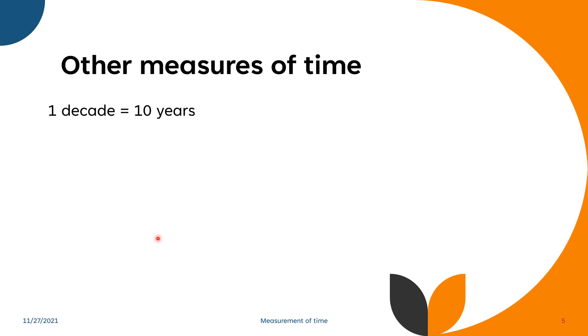We have another measurements or measures of time: One decade is equal to 10 years. One score is equal to 20 years. One century is equals to 100 years, and one millennium is equals to 1,000 years.